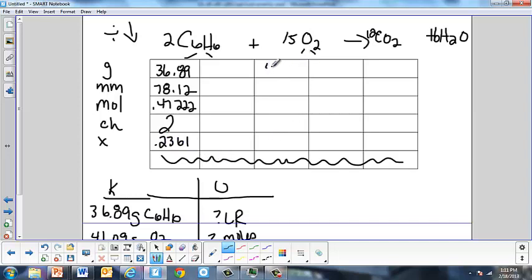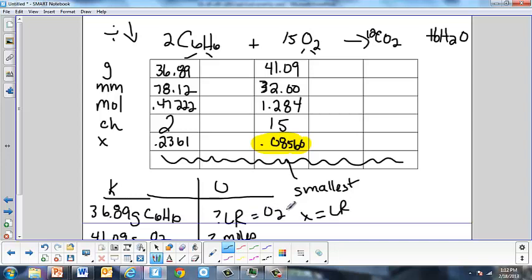Now, I'm going to come over here to the oxygen. For oxygen, I have 41.09. I have my molar mass of just the oxygen. It's going to be 32.00. If I take 41.09, divide it by 32, down the chart I divide, I get 1.284. I take that, I divide it by 15, I get 0.08560. Okay. So, based on that right there, this is going to be my limiting reactant simply because it has the smallest x. So, this is my limiter. So, my limiter is the oxygen.